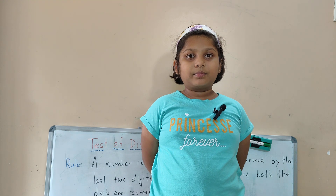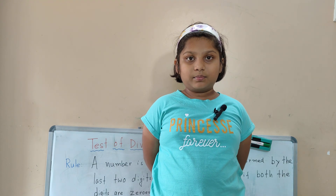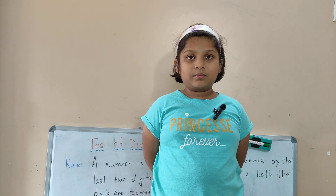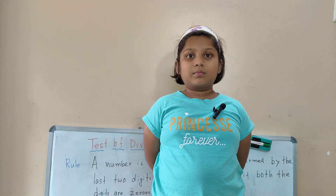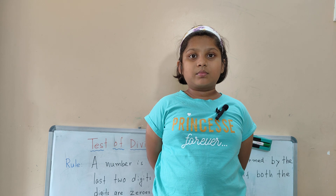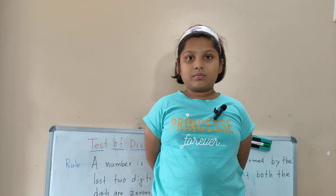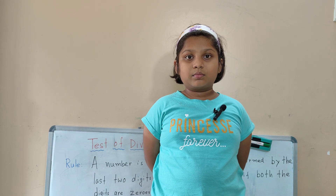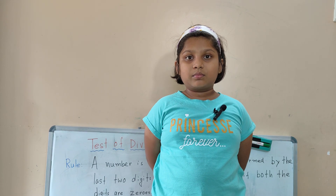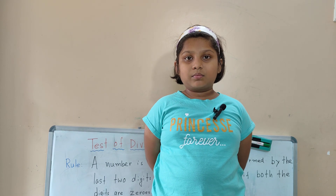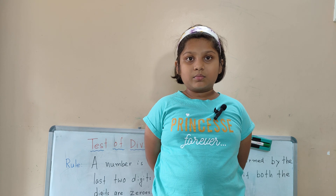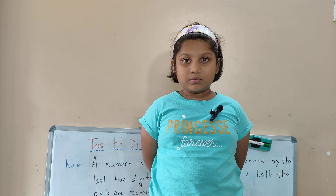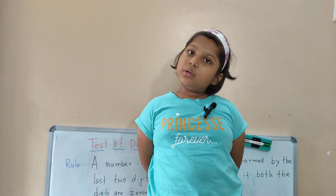A number is divisible by 4 if the number formed by the last 2 digits is divisible by 4, or if both the digits are 0s.